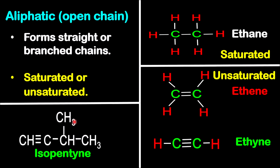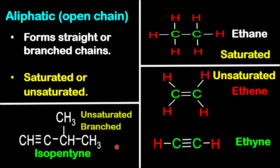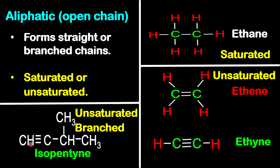Isopentyne — look at it carefully and you'll realize there is a side chain and there is a triple bond. So this one falls under two categories: it is unsaturated because of the triple bond, and it is branched because of the side chain.